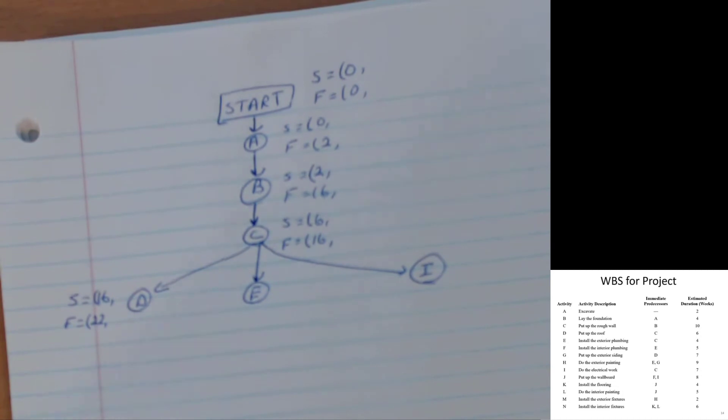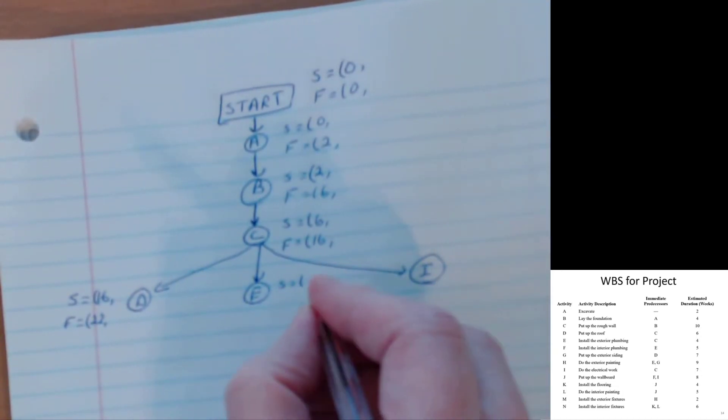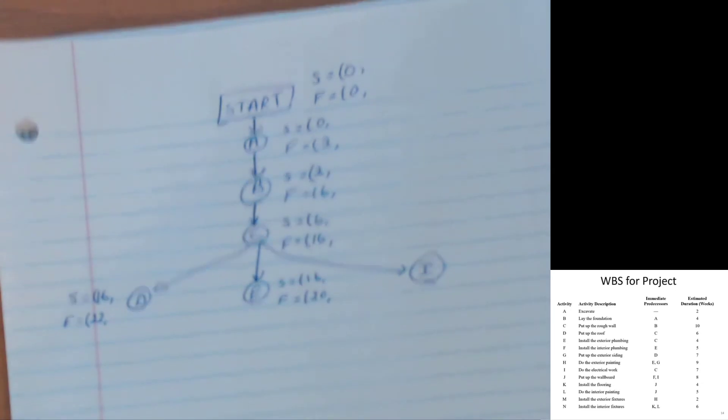E, on the other hand, again start activity. Same, right? Starts when C is finished, which is period sixteen. Finishes when? E takes four weeks. So that means it can't finish until period twenty.